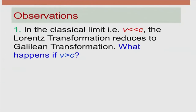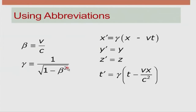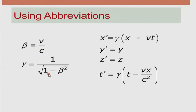What happens if v is greater than c? If v is greater than c, then β is larger than 1, and the factor (1 − β²) becomes negative, making γ imaginary. This means x prime would be imaginary, which is not physically possible. This is one of the arguments — Einstein said speeds greater than the speed of light should not be allowed, so particles cannot travel with speed greater than the speed of light, ensuring x prime and t prime always remain real.